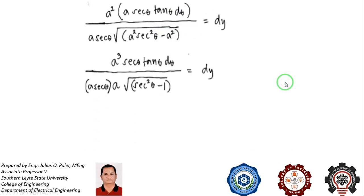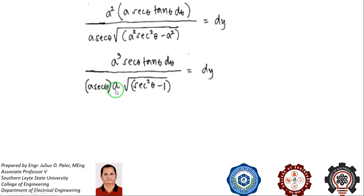We factor out a squared since it is common, so what remains inside is secant squared of theta minus one. Since the square root of a squared is a, we bring a outside the radical sign. We copy a secant theta in the denominator and multiply a squared and a, which gives us a cubed.